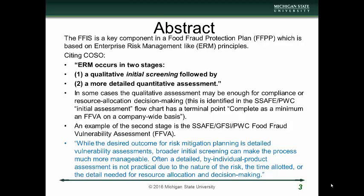Often a detailed by-individual-product assessment is not practical due to the nature of the risk, the time allotted, or the detail needed for resource allocation and decision making. The key here is giving the authority, the ability, and the support for doing this high-level assessment first to look holistically at the entire company. You don't want to just go into detail for one type of fraud or one type of product. You want to take a look across the entire corporation, and then go into more detail where needed. There may be some areas where a countermeasure addresses an entire product group globally, so there's an efficiency to starting at this initial screening step.